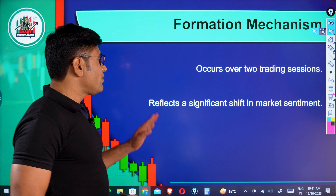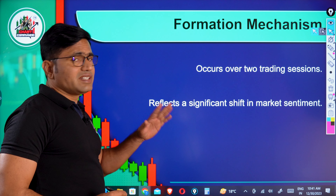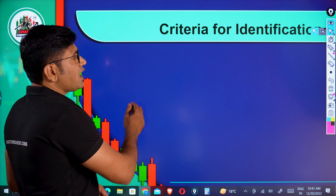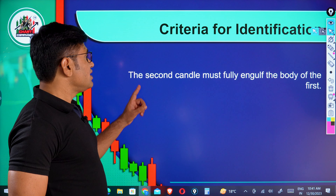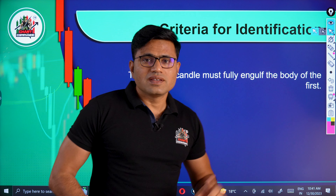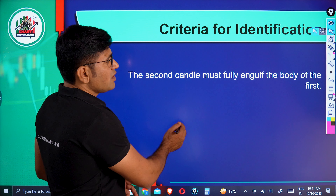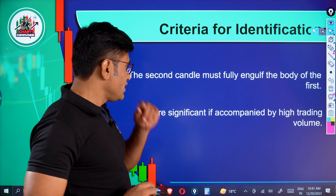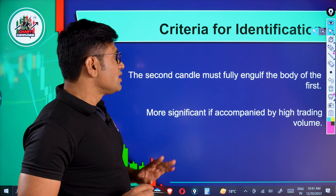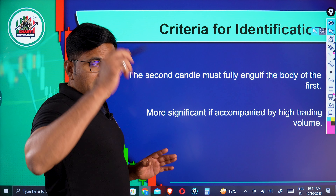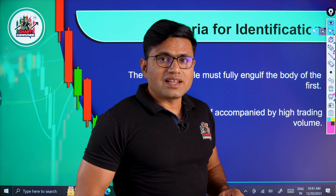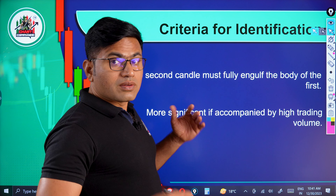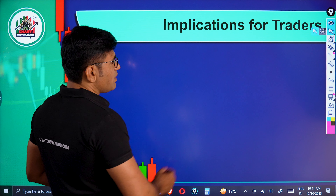This reflects a significant shift in market sentiment — the whole sentiment changes. The criteria must be identified. The second candle must fully engulf the body of the first candle. More significant is the high trading volume. If the other candle comes with very big volume, the accuracy is good and the reversal of the market is confirmed.